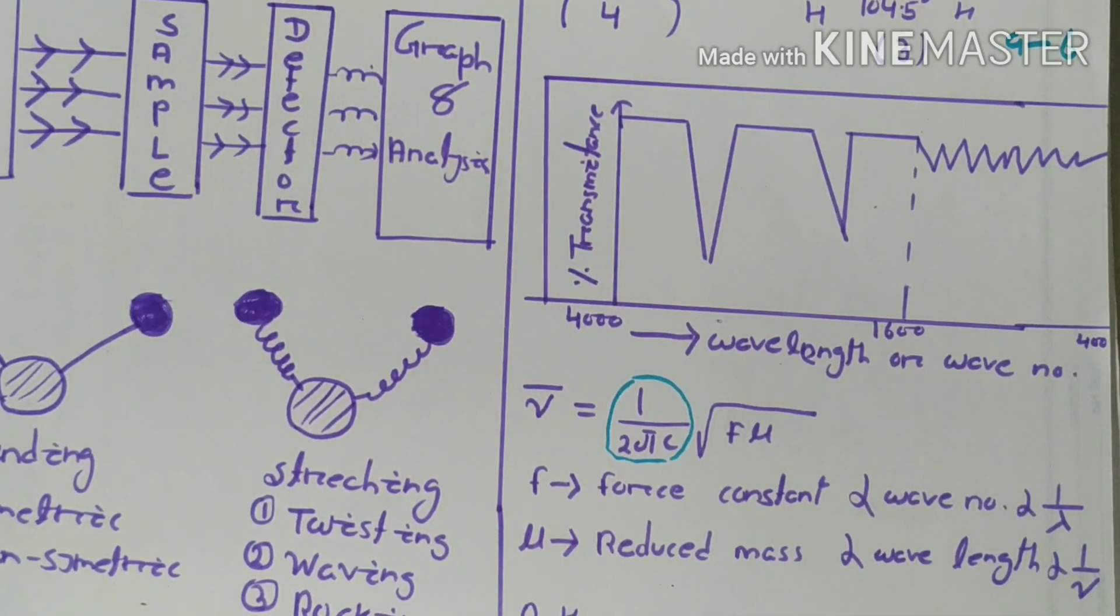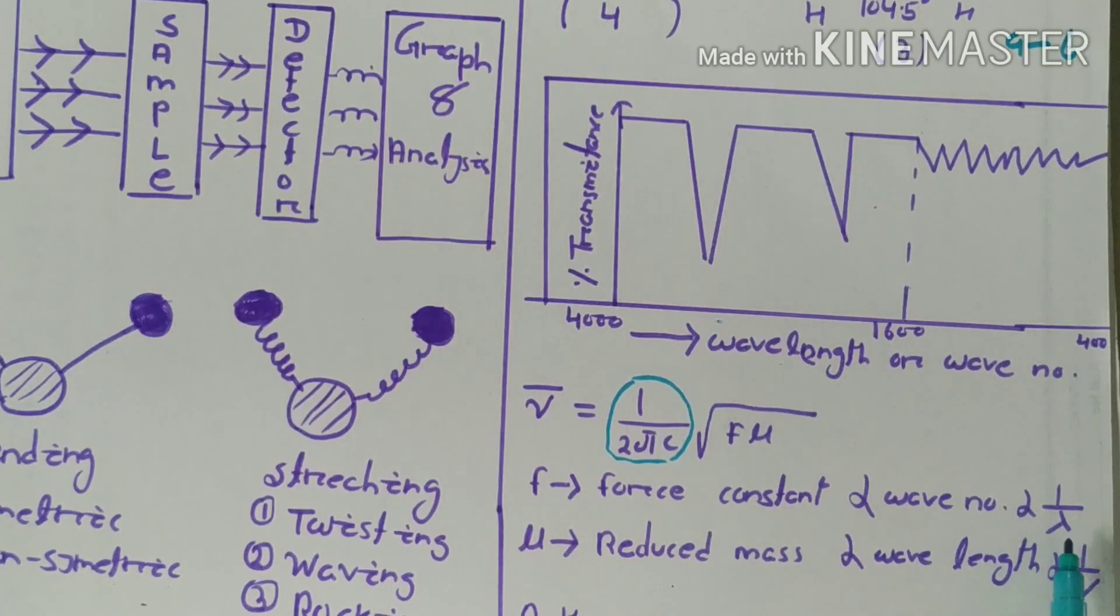f is the force constant, which is generally bond strength, and this is directly proportional to wave number and inversely proportional to wavelength. μ is reduced mass and can be calculated by ma times mb divided by ma plus mb, which is directly proportional to wavelength and inversely proportional to wave number.